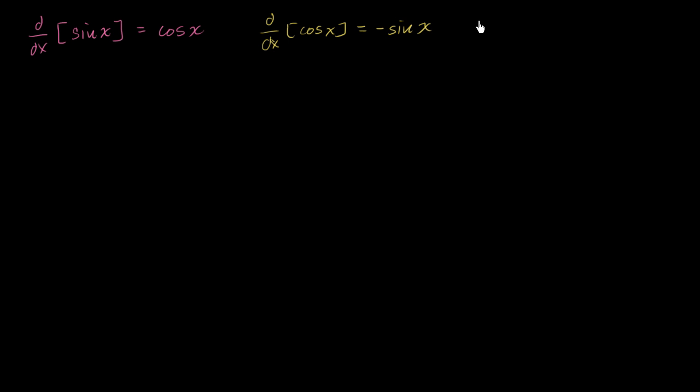And then finally, the derivative of tangent of x is equal to 1 over cosine squared of x, which is equal to the secant squared of x. Once again, these are all very good things to know.